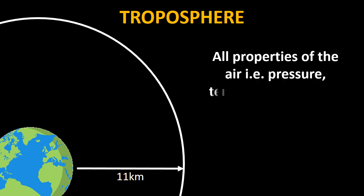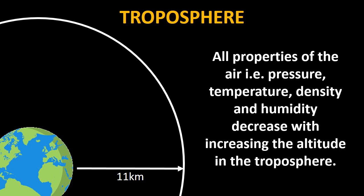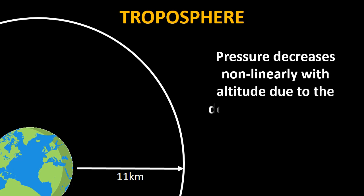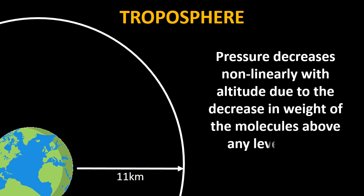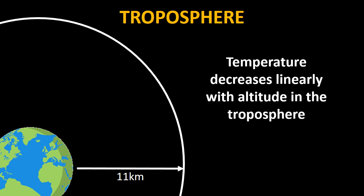All properties of the air — that is pressure, temperature, density, and humidity — decrease with increasing altitude in the troposphere. Pressure decreases non-linearly with altitude due to the decrease in weight of the molecules above any level of the atmosphere. Density also decreases non-linearly due to the expansion or decompression of molecules in the atmosphere. Temperature decreases linearly with altitude in the troposphere.